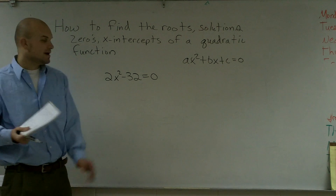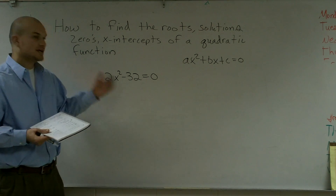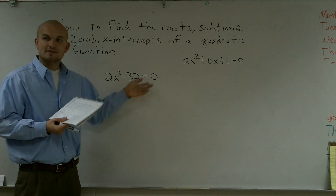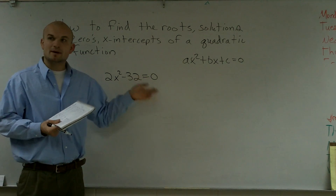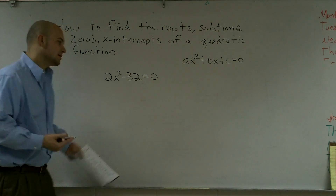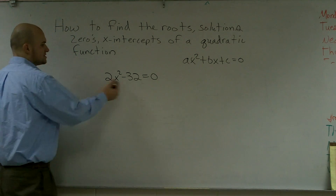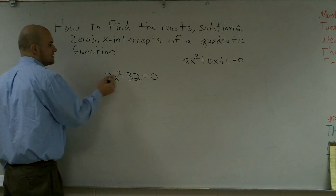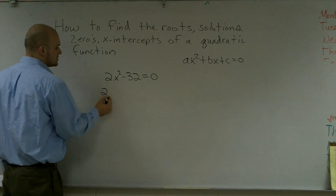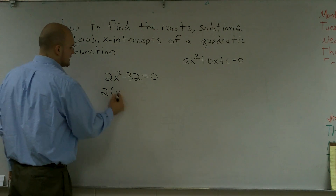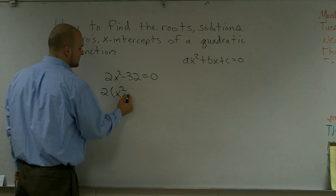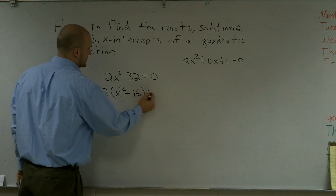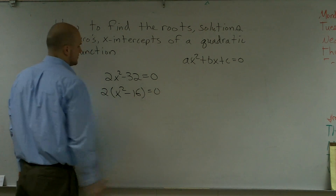Now, I could do like my previous problem — add the 32, divide by 2, and take the root. Or an easier way is to just factor out what they have in common. I notice they both have a 2 in common, so I factor out a 2 and get x squared minus 16 equals 0.